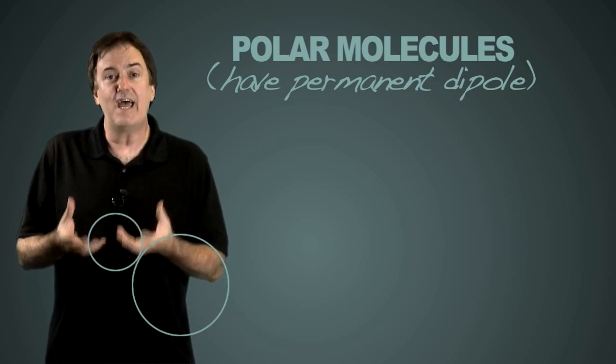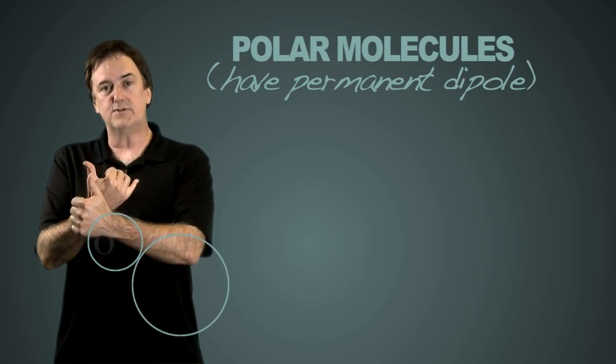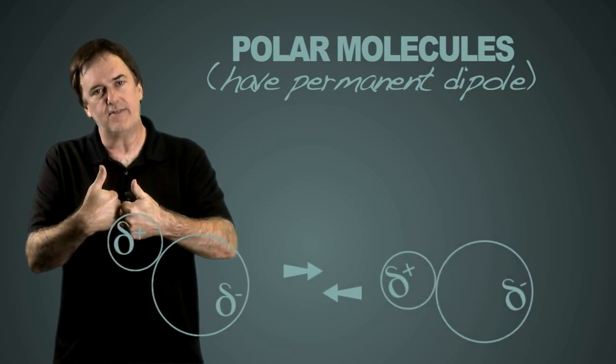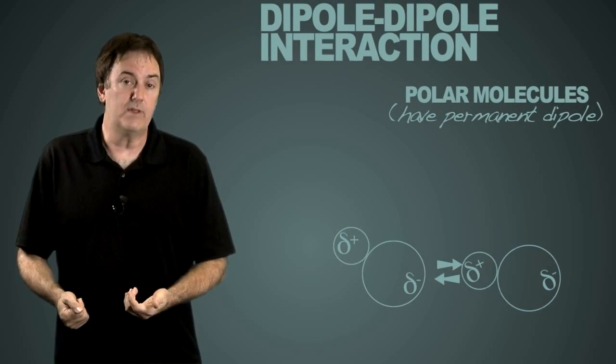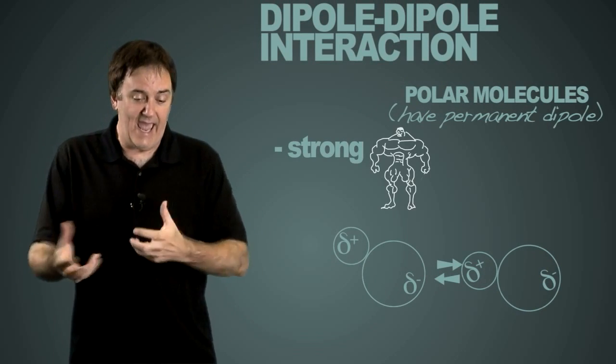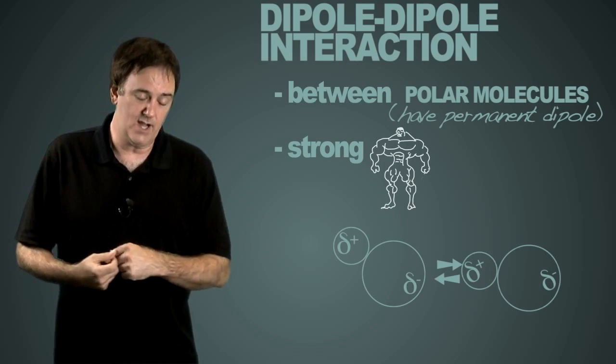And if you have a permanent dipole, you're going to have a setup within the molecule where you always have partial positive, you always have partial negative, and those are going to get together. That's called dipole-dipole interaction, and that is the strongest interaction you can have within a molecule to another molecule.